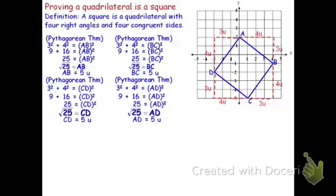I know it's SAS because each pair has a side that's four units long, each pair has a side of three, and the right angle is in between those, so you're looking at side-angle-side. If the triangles are congruent by side-angle-side, and congruent triangles have congruent parts, then AB is congruent to BC is congruent to CD is congruent to AD, because they're all the hypotenuse of those congruent triangles, and therefore they're all five units long.